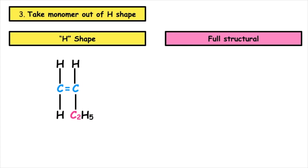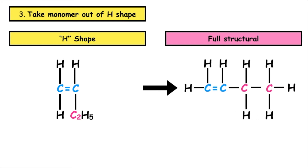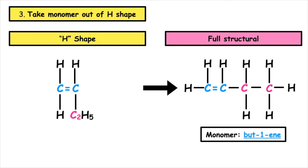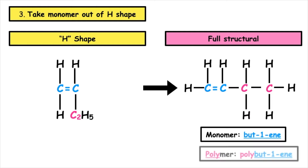we highlight the carbon-to-carbon double bond. We then bend any branches up to form a straight-chained alkene. If we wanted to name this monomer, we would have four carbons in a row. The carbon-to-carbon double bond is in position one, so this monomer would be known as bute-1-ene, which means the name of the polymer would have been polybute-1-ene.